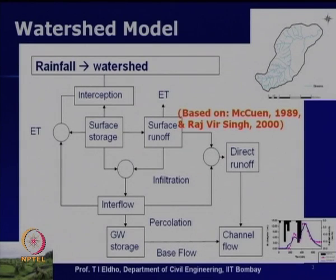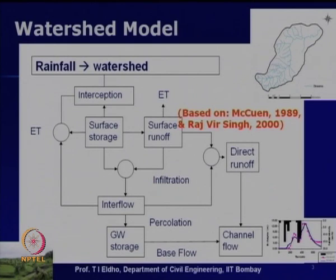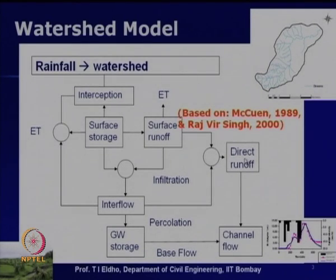As we discussed earlier, when we deal with water as a resource for a watershed, we have to see the various processes happening in the transformation from rainfall to runoff. Various hydrological processes occur between precipitation and runoff, including interception by vegetation, evapotranspiration, surface storage or depression storage, infiltration, interflow, percolation, surface runoff, and finally direct runoff.